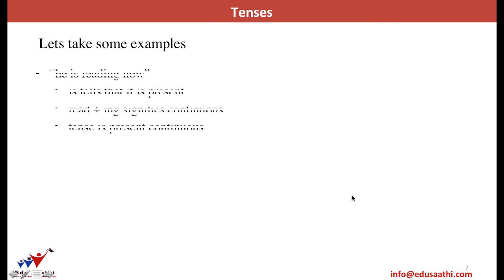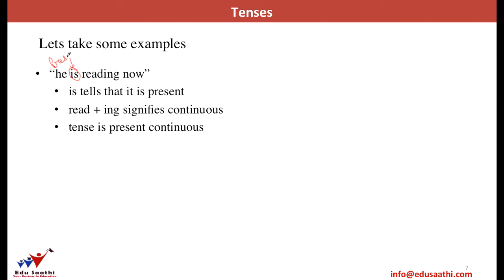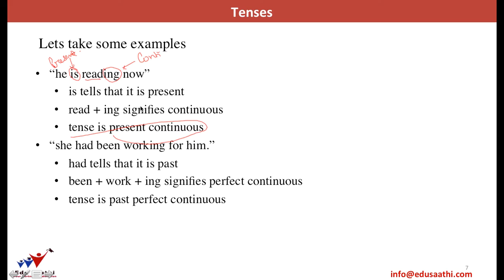Let's take some examples. 'He is reading now' — 'is' is the auxiliary which justifies the present tense, and 'read' ends in '-ing,' so since it ends in '-ing' it becomes continuous — the total tense becomes present continuous. Another example: 'She had been working for him' — 'been' and the verb ending in '-ing' makes it perfect continuous, and 'had' is used as the second form of 'has' in the past time frame, so the total tense becomes the past perfect continuous tense.